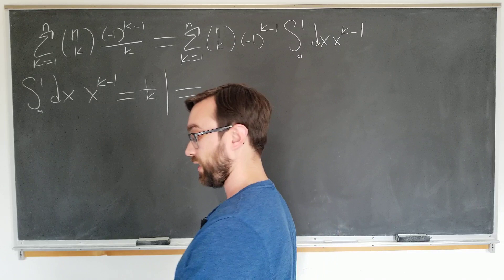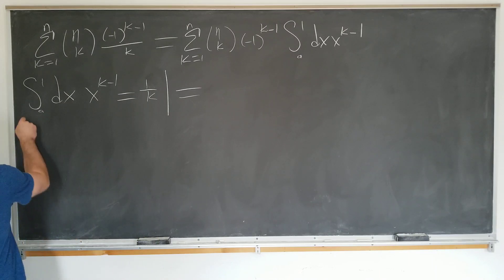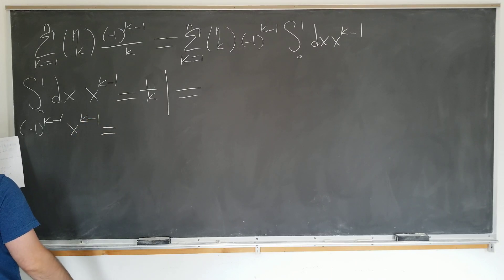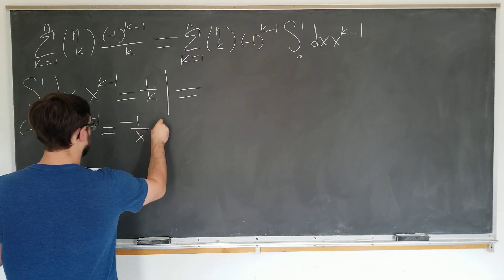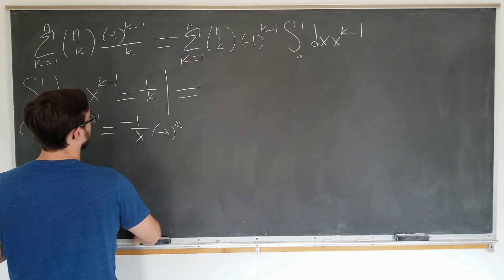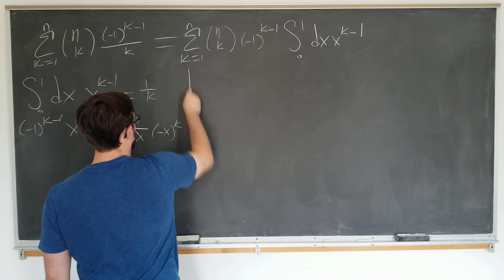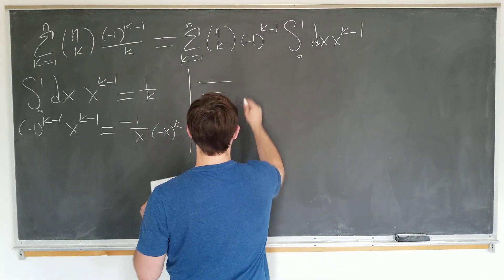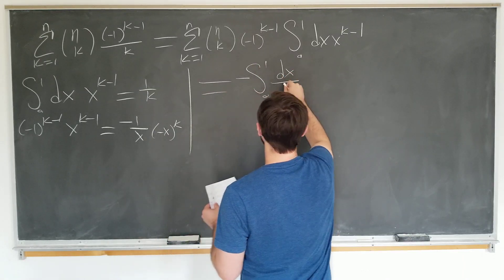We are going to use the fact that minus one to the k minus one, x to the k minus one. We're going to use in the following form. It's going to be written here as minus one times minus x to the k for reasons which will become clear soon. And we write our sum in the following format. It's going to be minus the integral from zero to one with respect to our new variable x divided by x. Now we have the sum on the inside as k goes from one to n. We have binomial coefficients n choose k, minus x to the k.